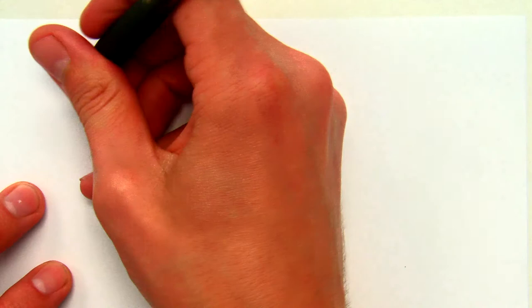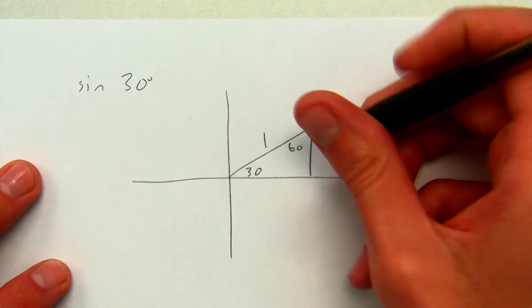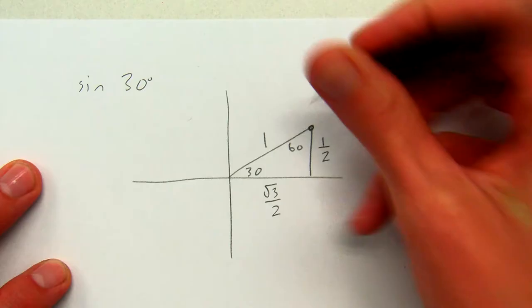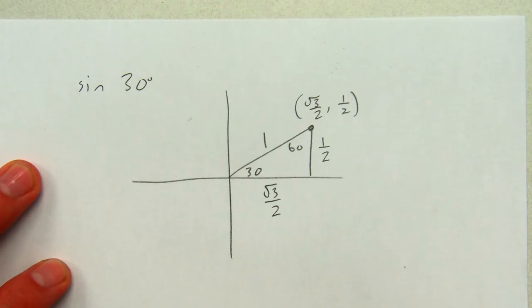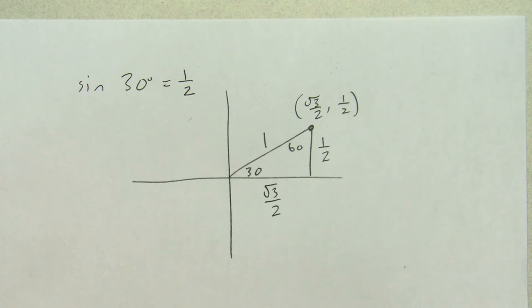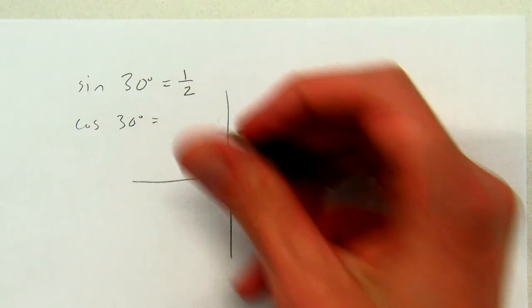What kind of numbers do I get as outputs for 30-60-90 right triangles? Sine of 30 degrees: draw 30 degrees in standard position, making a 30-60-90 right triangle with hypotenuse 1. The shorter side is 1/2 and the longer side is √3/2, so the coordinate is (√3/2, 1/2). Sine of 30 is the y value — 1/2. Cosine of 30 is the x value — √3/2. These are numbers you'll recognize from all over the unit circle.